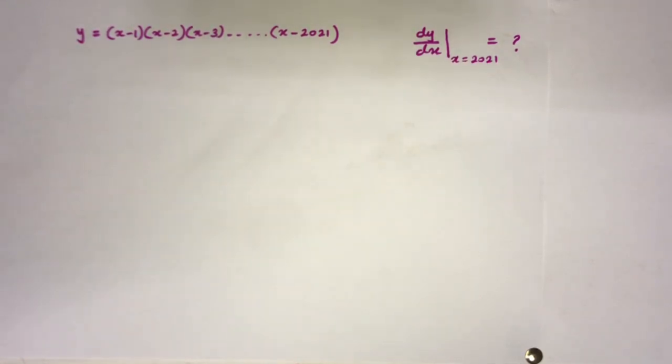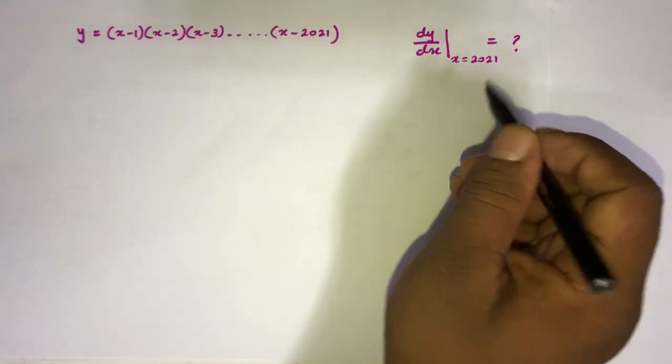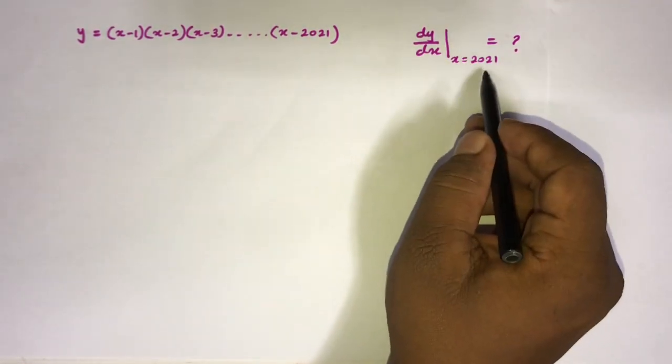If y equals (x-1)(x-2)(x-3) and the last term (x-2021), then we should find dy/dx when x equals 2021.